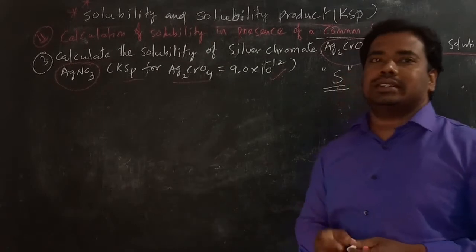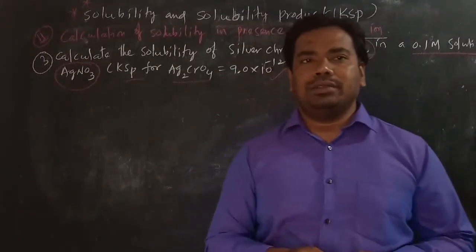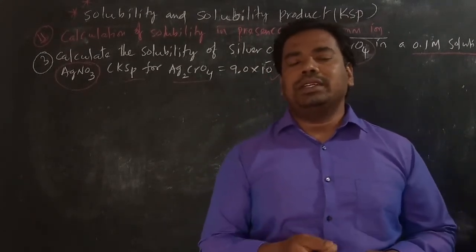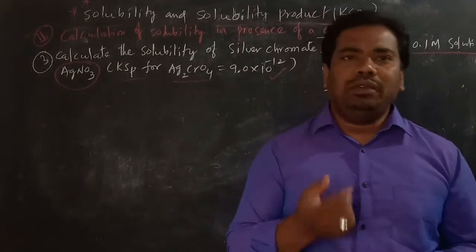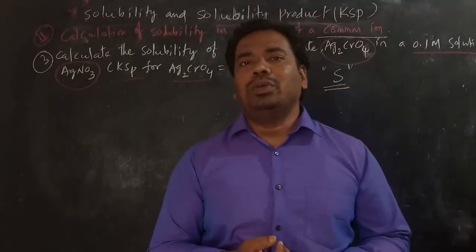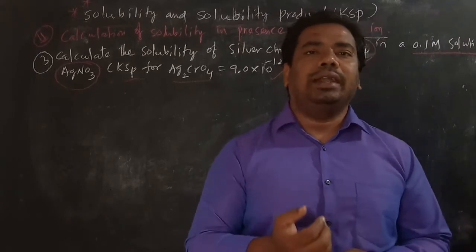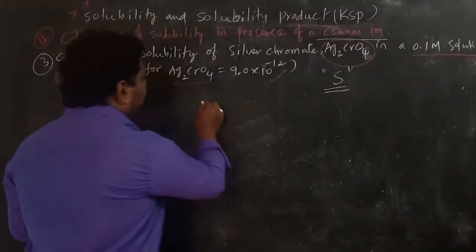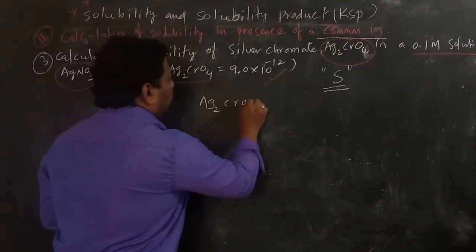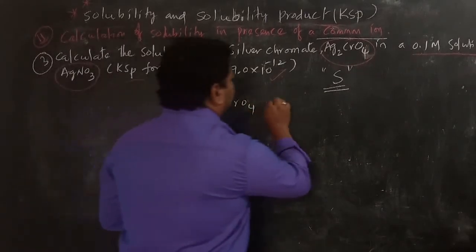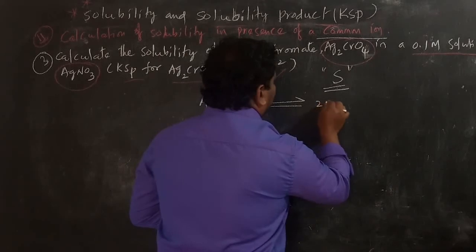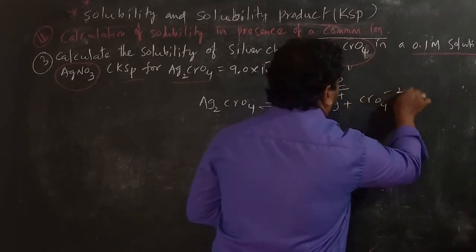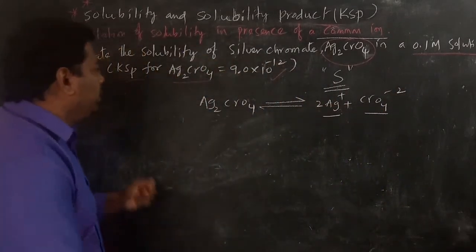As discussed in the previous lecture, when the common ion is present in a sparingly soluble salt, it decreases the solubility of that sparingly soluble salt and the reaction shifts towards the left-hand side. Here, Ag₂CrO₄ is in equilibrium with 2Ag⁺ plus CrO₄²⁻.